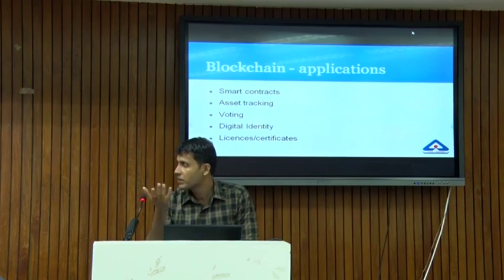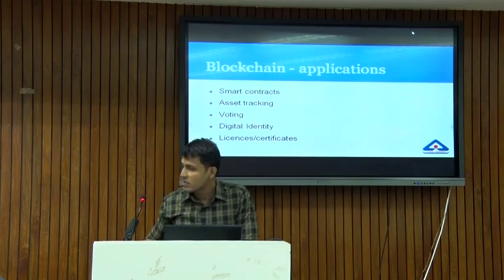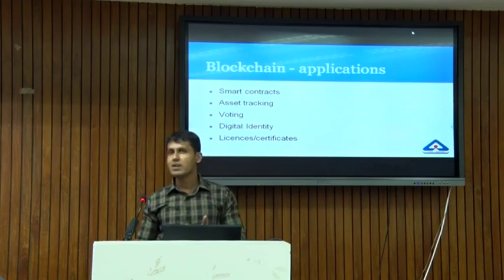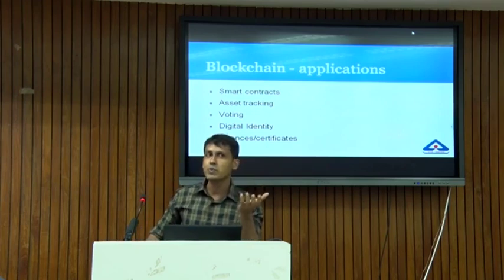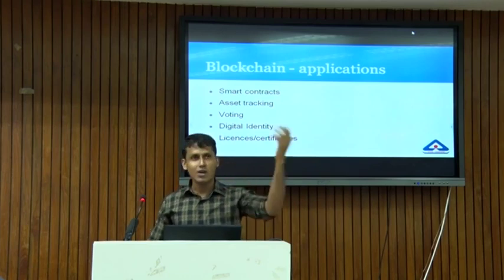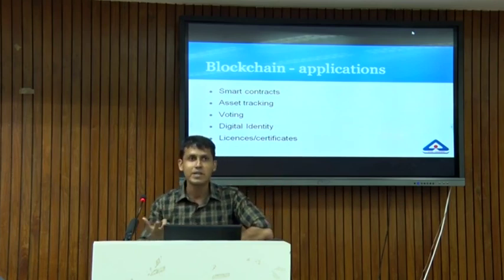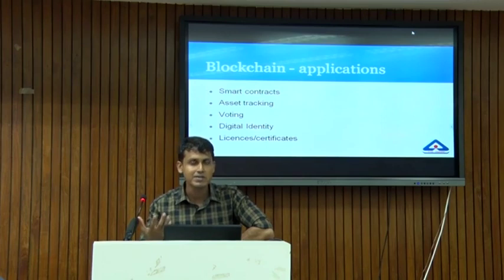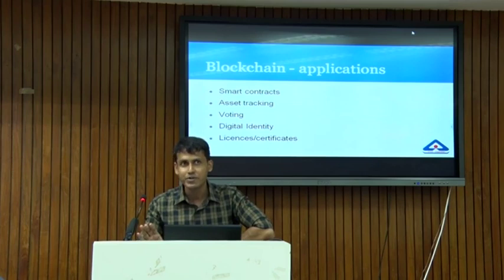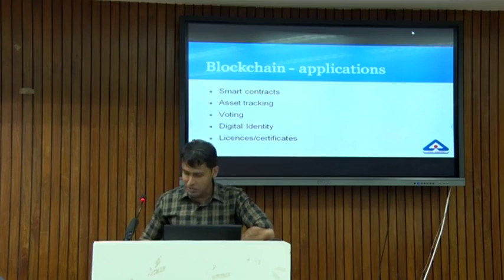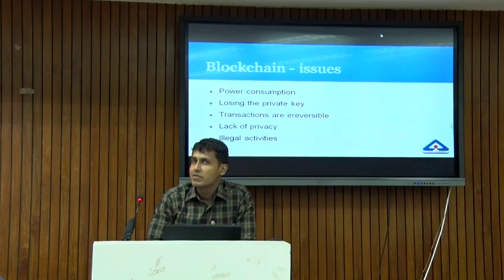For example, if someone is maintaining our computers, when we click a button indicating the condition is satisfactory, we need not process it internally through approvals from the accounts department. All those steps can be avoided — we can program it so that once the conditions are met, the network transfers the amount automatically. That is what a smart contract is.